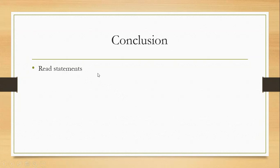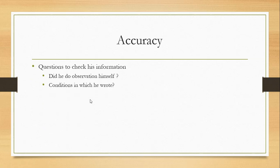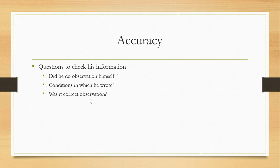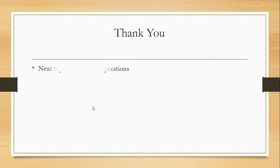In conclusion: as a researcher, you read the document, check if there is an error, and if so, determine whether the error was made intentionally or not. If the error is deliberate, it is a matter of good faith — the author has not been sincere — and you ask the good faith questions about praise, sympathy, pleasing the public, and so on. If the error was not deliberate, you check the competency level of the author and ask the accuracy questions. In the next slideshow, we will talk more about synthetic operations.